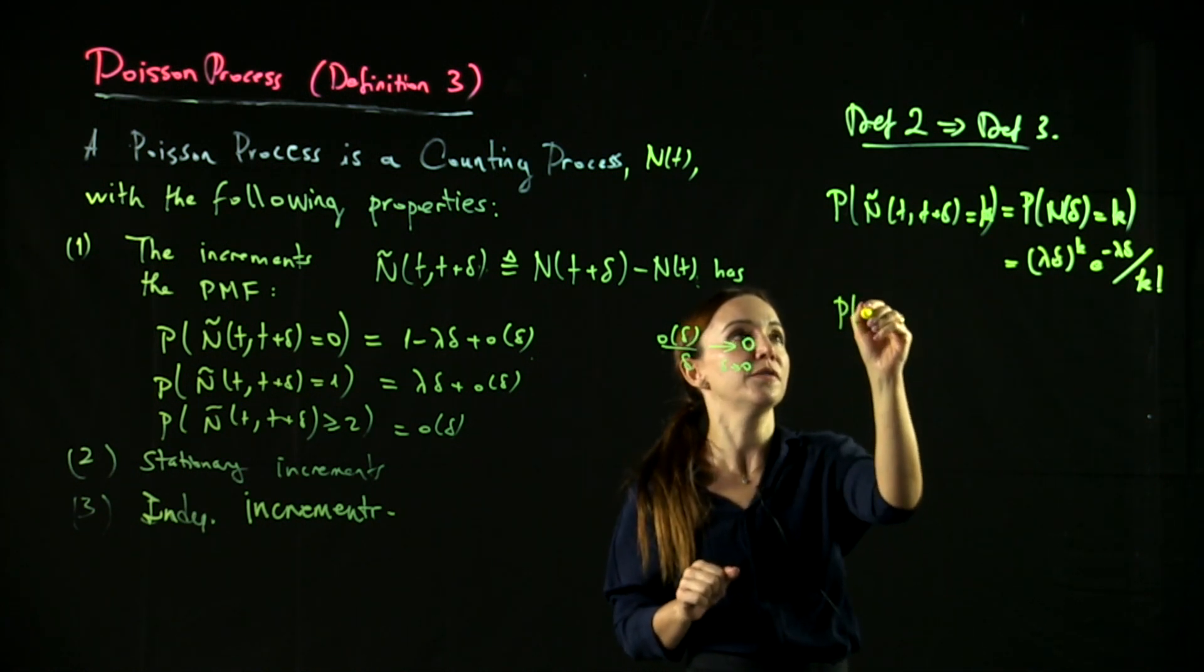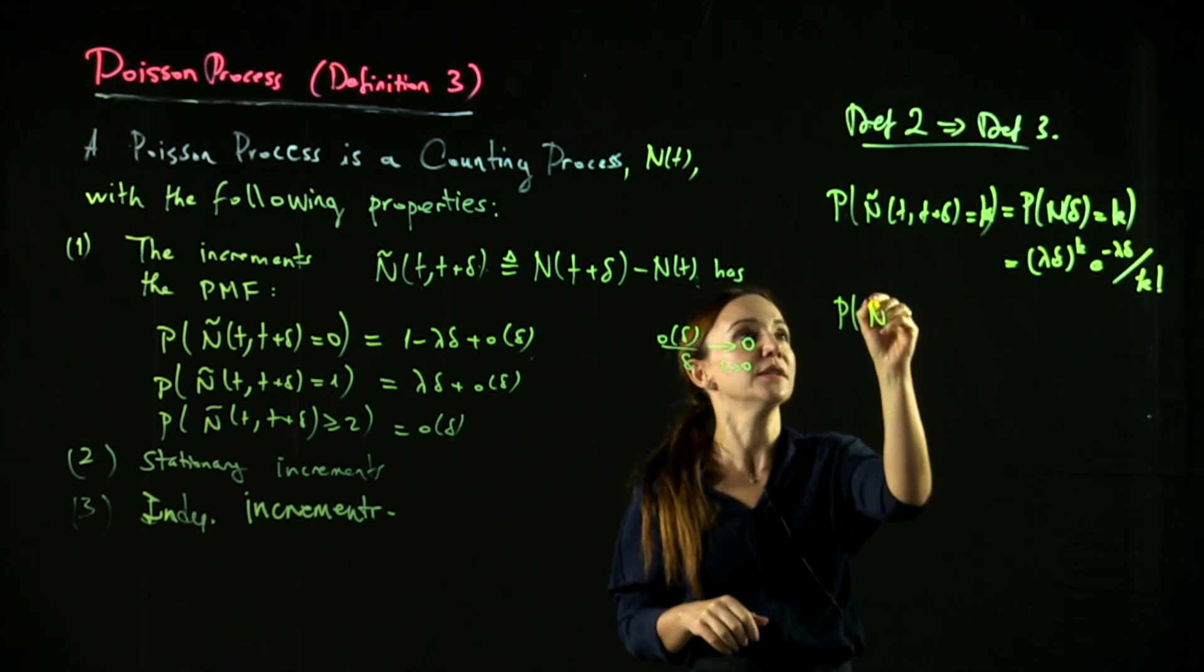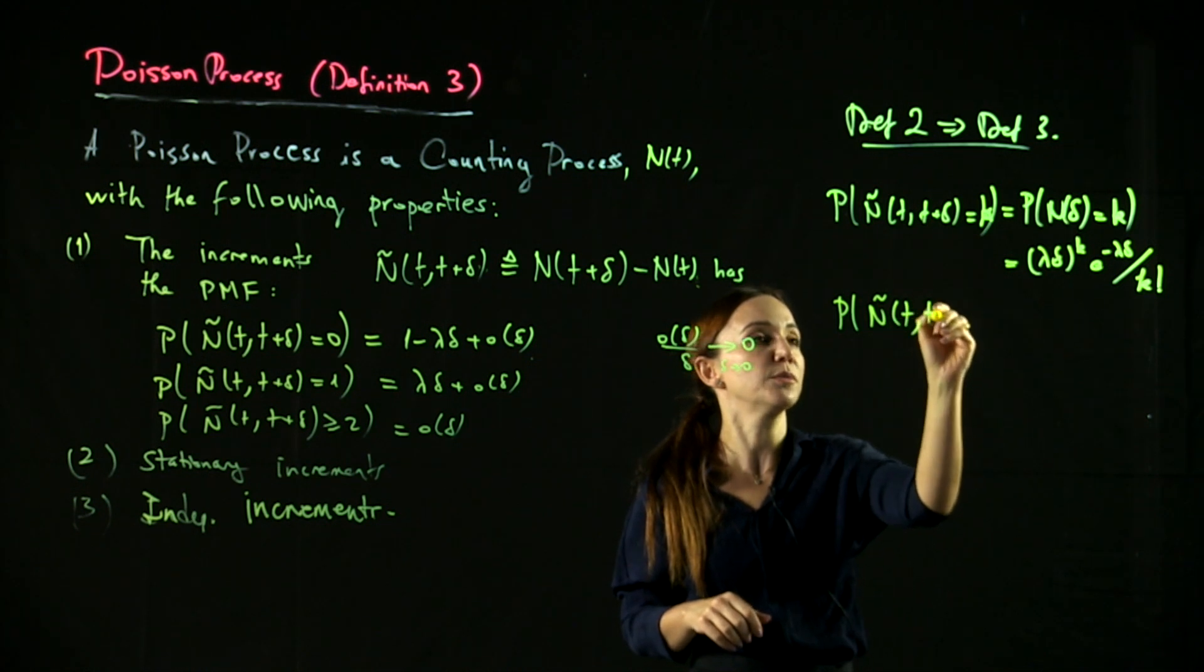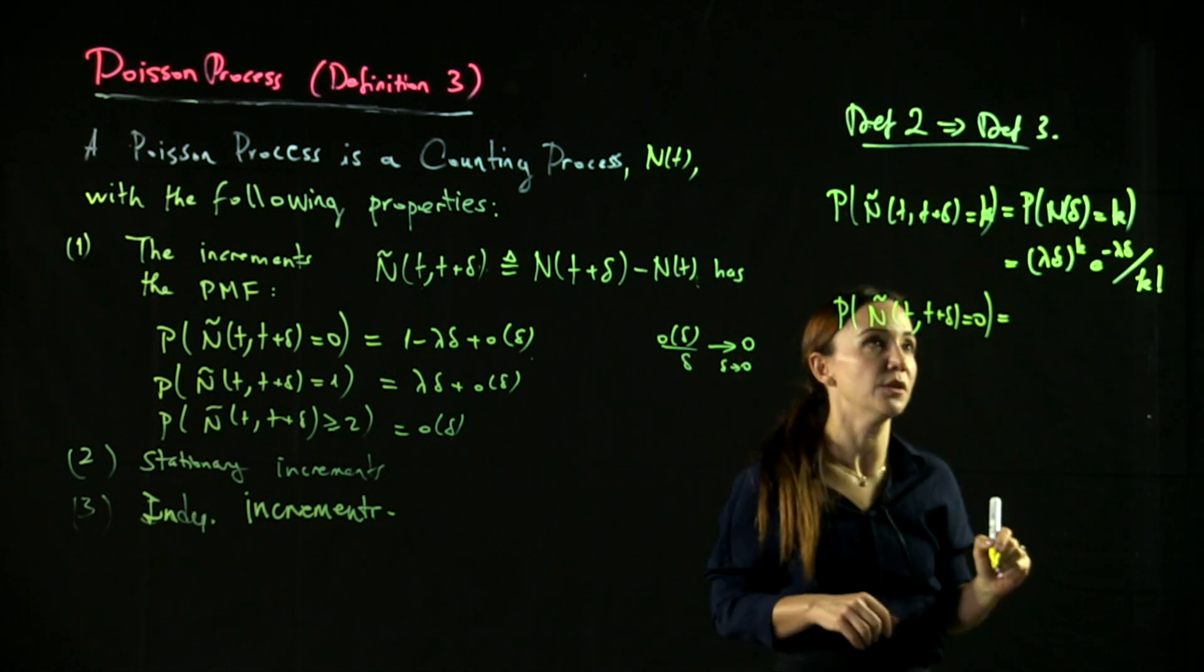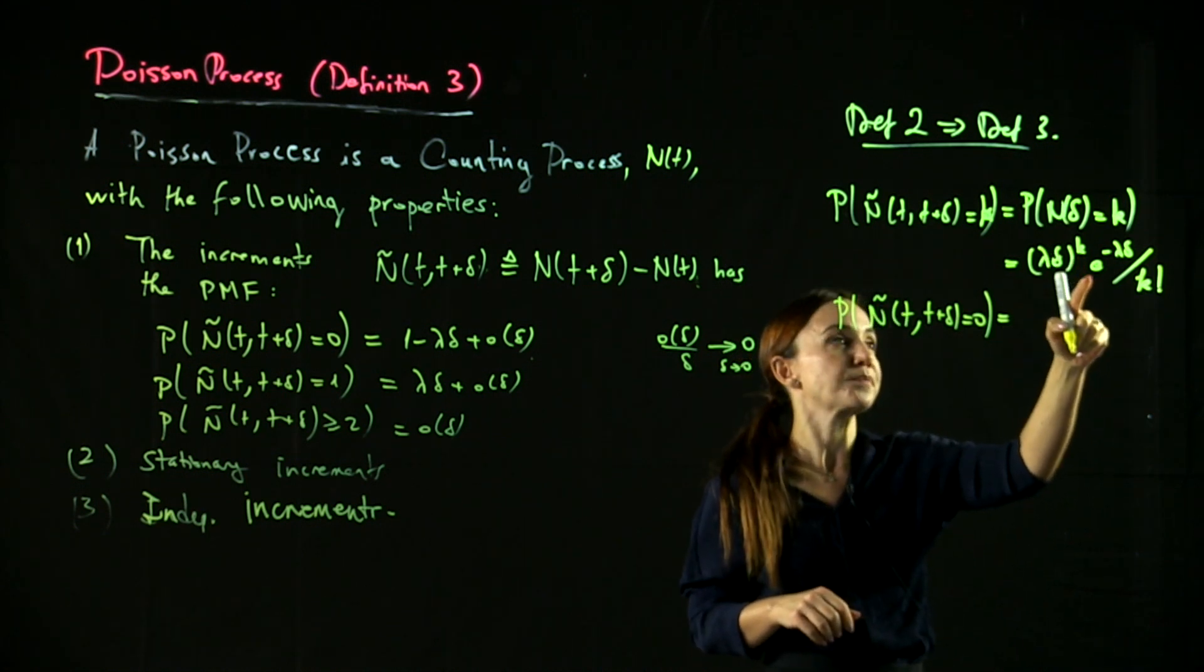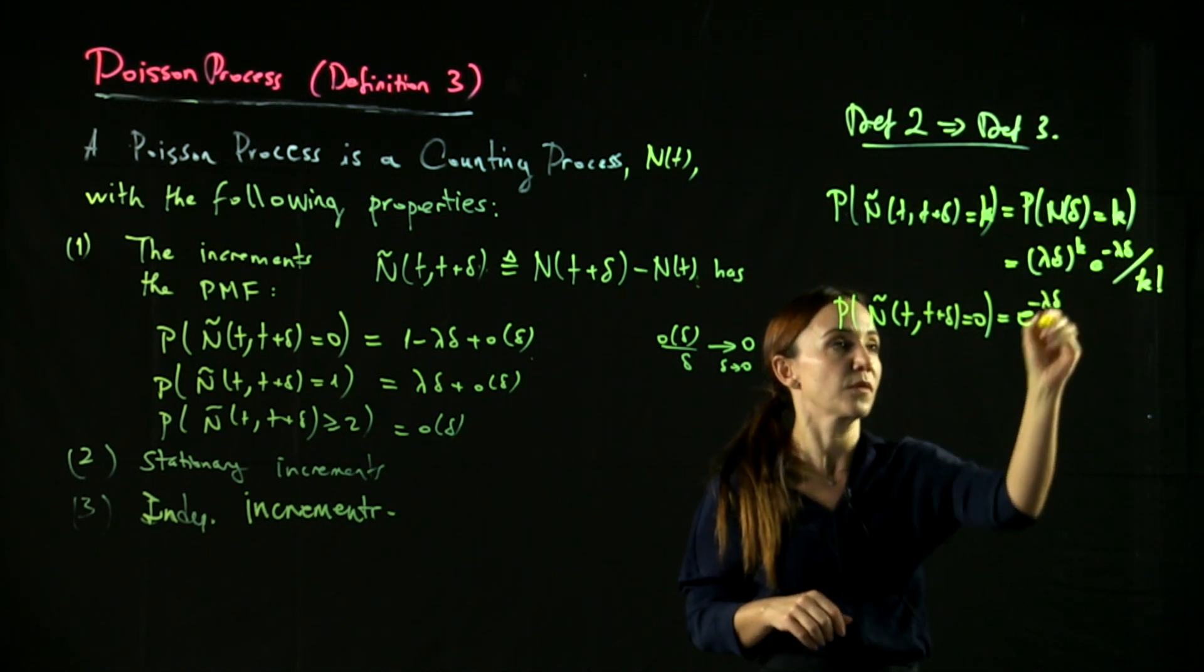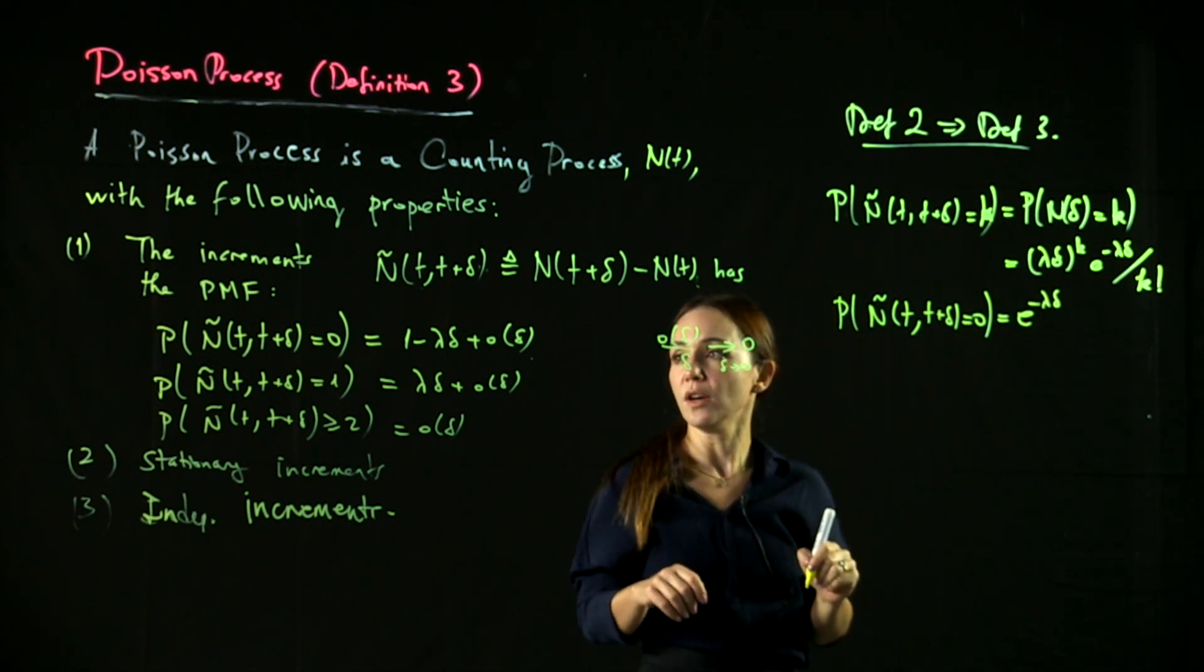First of all, let's evaluate it for k equals 0. The probability that n tilde from t to t plus delta is equal to 0 is given by substitute 0 here, e to the minus lambda delta, which is consistent with this.